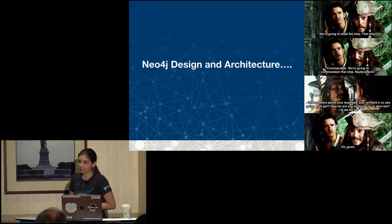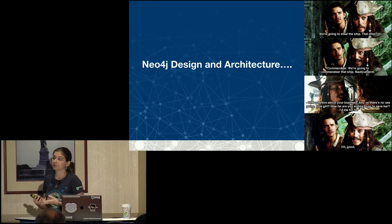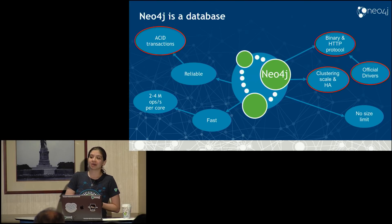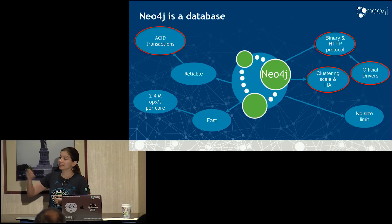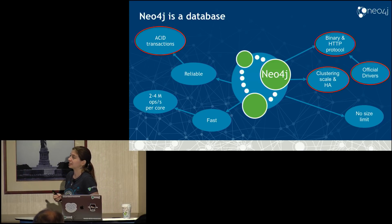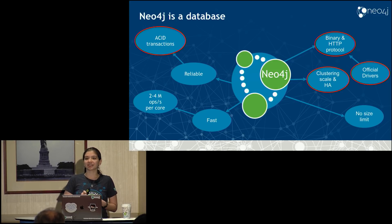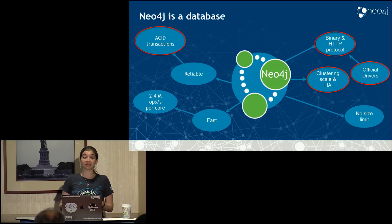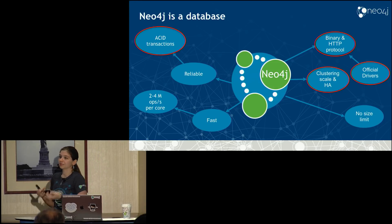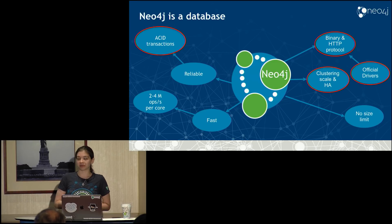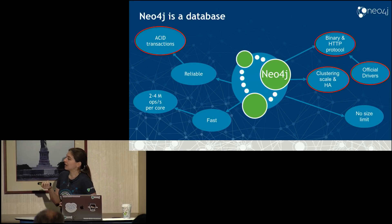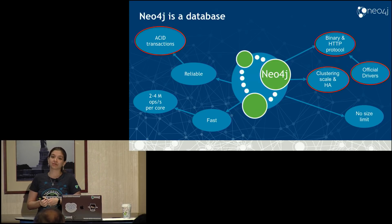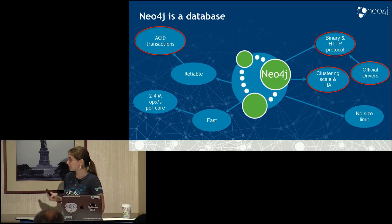A little bit about design and architecture. Neo4j is a database — at its core it provides basic database capabilities. The highlighted things are what really stick out and are super important for the certification. First, ACID transactions — that's Atomic, Consistent, Isolated, and Durable. That basically means you're not going to have a partial transaction commit to your database. Either the full transaction commits or the full transaction rolls back if it's not successful. That's something relational databases often provide, but not all NoSQL and graph databases do. We feel it's very important. We're also very fast, and we provide clustering scale and high availability capabilities for enterprise needs — things like backups, failovers, and some security measures.